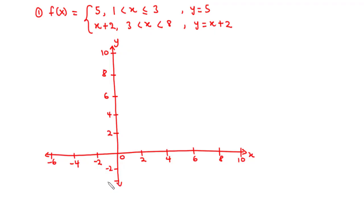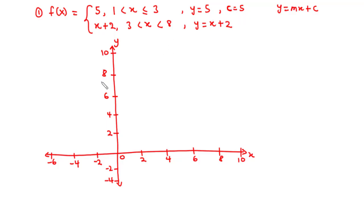Now let's consider each function at a time. The first one is y = 5. Comparing this to the equation of a line y = mx + c, we realize there is no value for m (the gradient), and the value we have is c, the y-intercept. So c = 5, meaning we are going to have a straight line parallel to the x-axis cutting through 5 on the y-axis. We draw dotted lines through 5 on the y-axis.